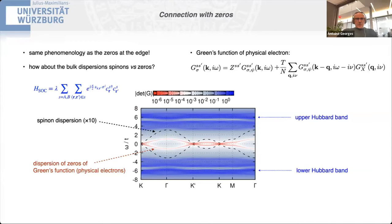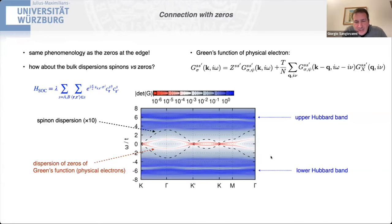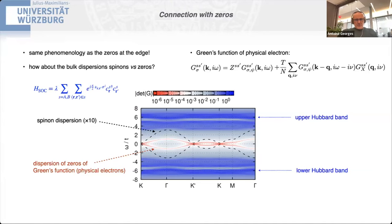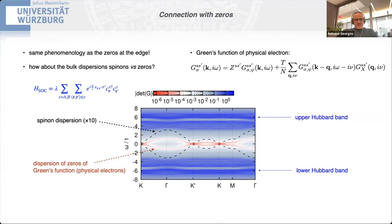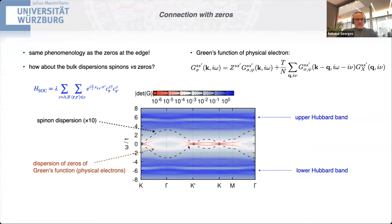For clarification: in the slave rotor solution we get a fully gapped spin liquid — the charge sector has a large gap, and the spinon gap is controlled by the spin-orbit coupling λ. When λ is finite there is a gap at the K point; at λ=0 the bulk becomes gapless. This is consistent with the gapped spin liquid picture.